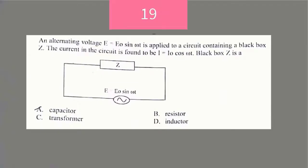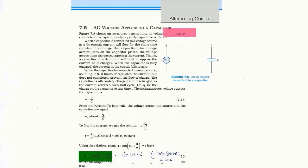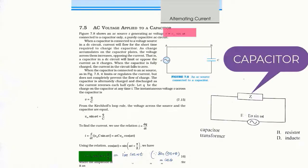An alternating voltage E equals E_naught sine(omega*t) is applied to a circuit containing a black box Z. The current in the circuit is found to be I equals I_naught cos(omega*t). We have to find what the black box Z is. For AC applied to a capacitor, the applied voltage is V equals Vm sine(omega*t), and the current is I equals Im sine(omega*t + π/2). Since sine(90 + theta) equals cos(theta), this matches the given current. So the given condition is satisfied when AC is applied to a capacitor, and Z should be a capacitor.